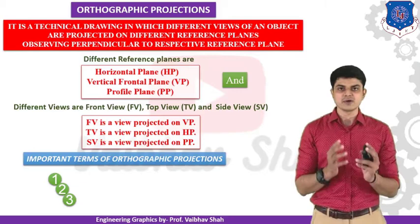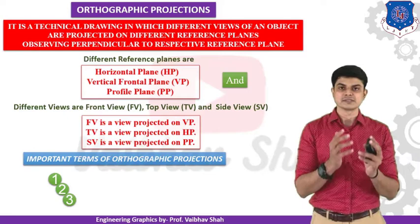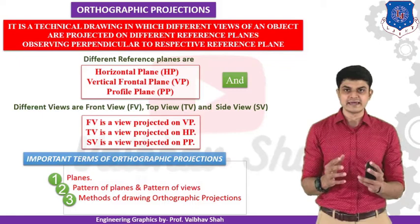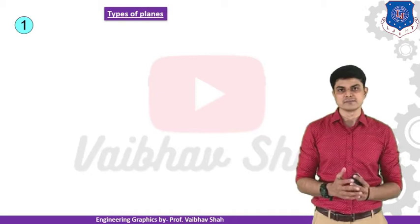There are three basic elements of orthographic projection that we need to understand in order to convert a 3D object into a 2D object. First, the planes. Second, the types of planes and patterns. Third, the method of drawing orthographic projections. Let us start with the types of planes.